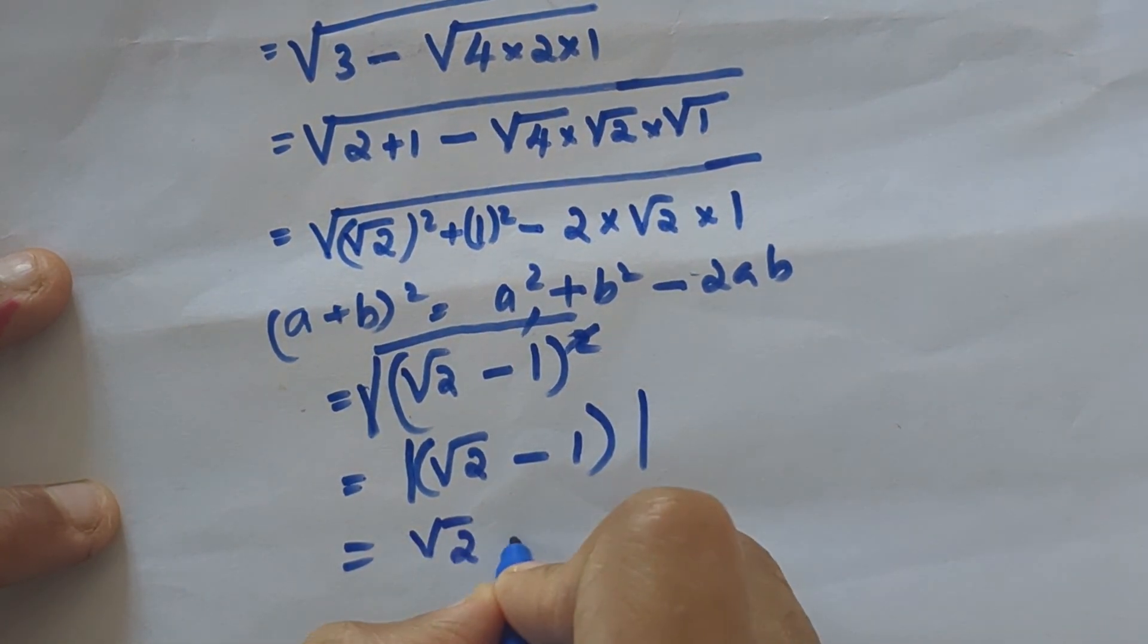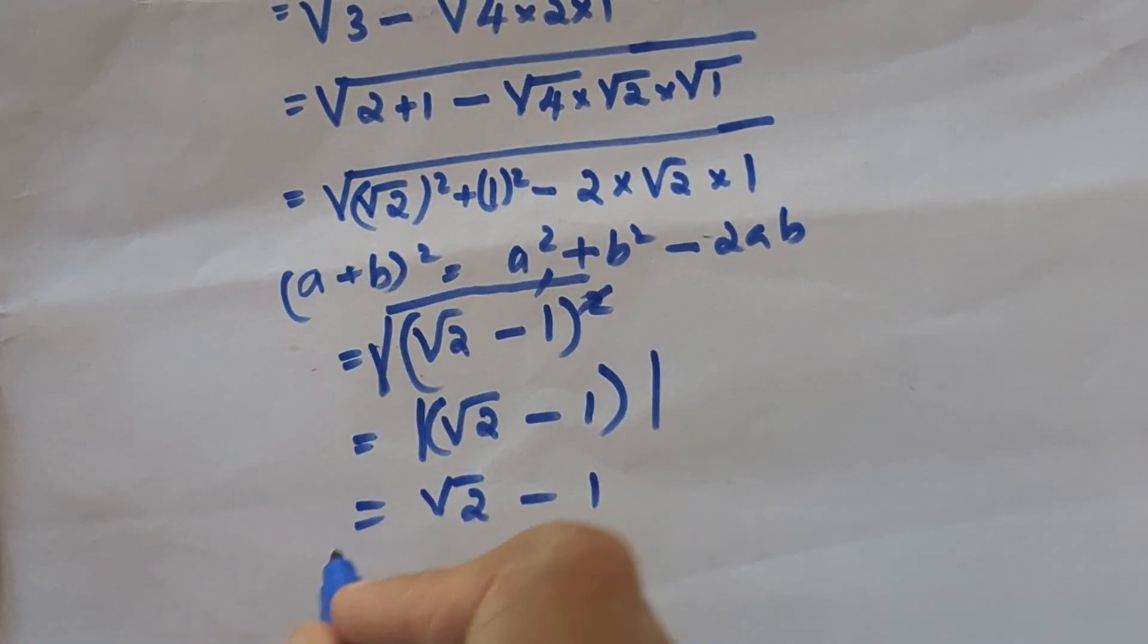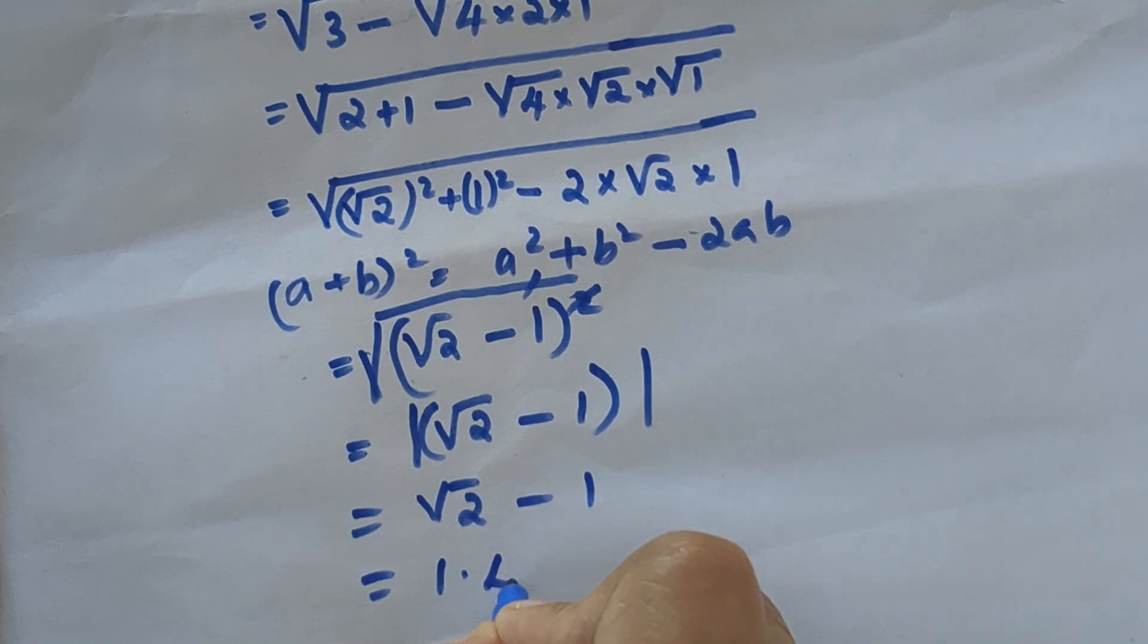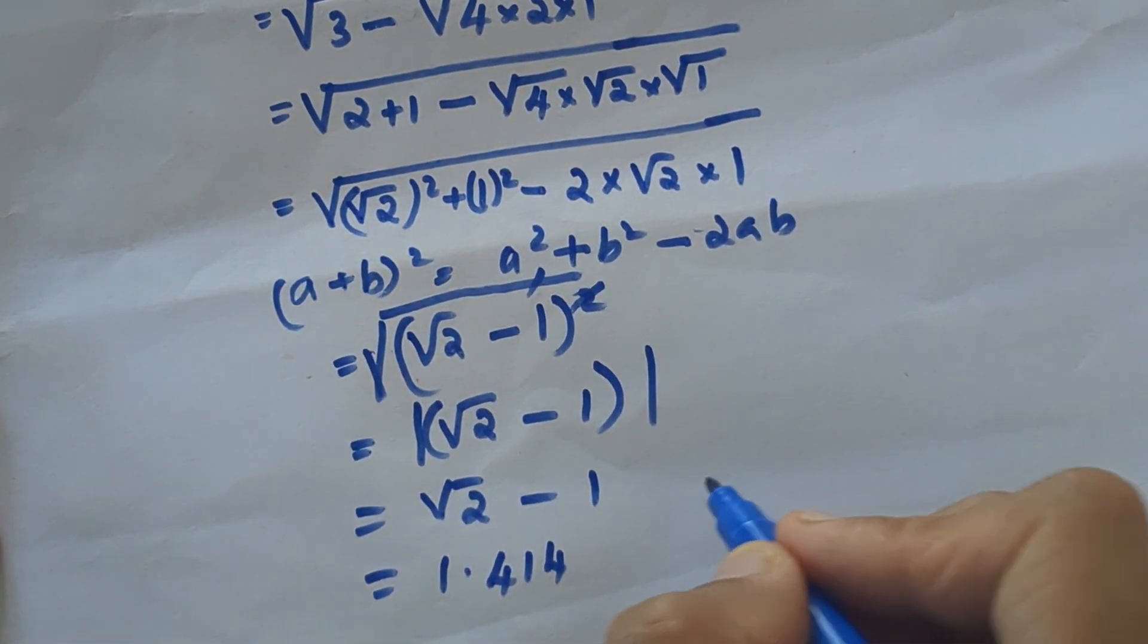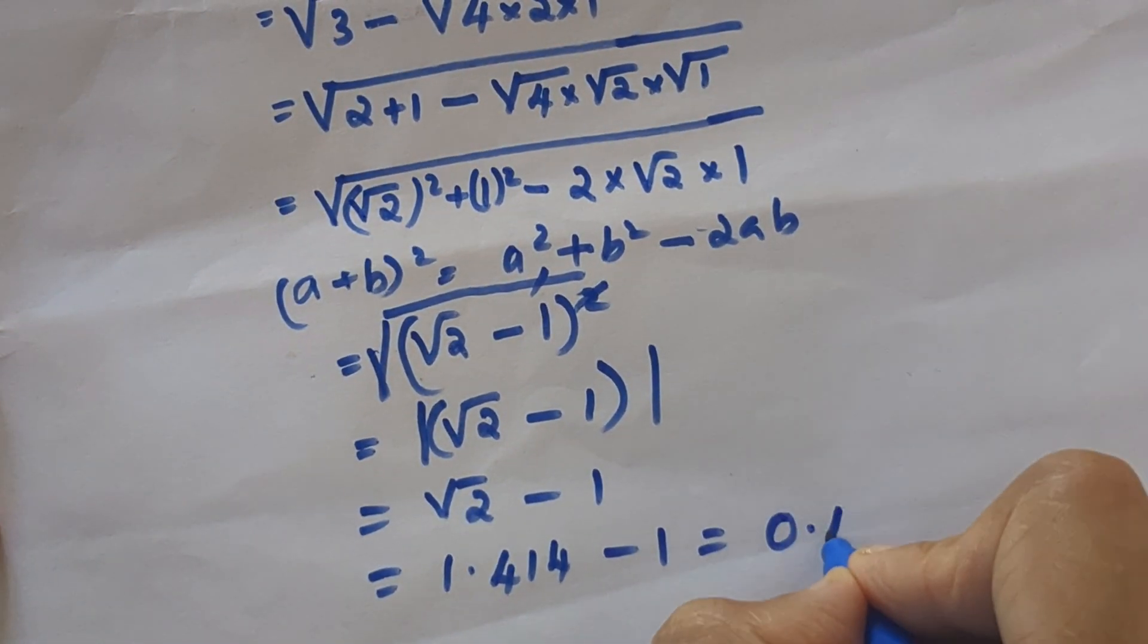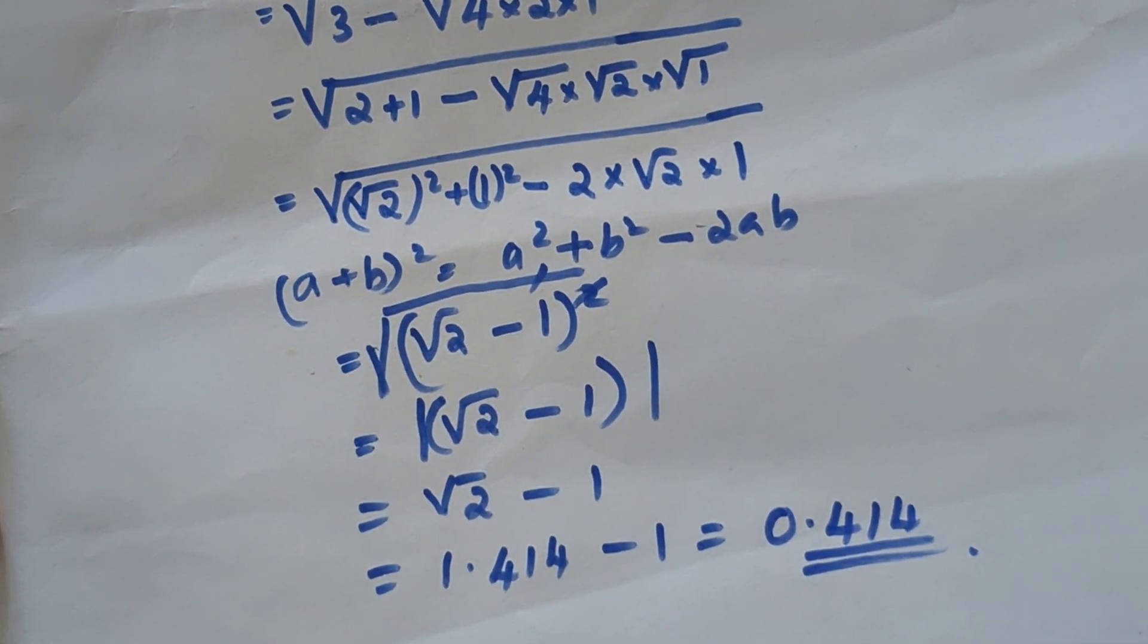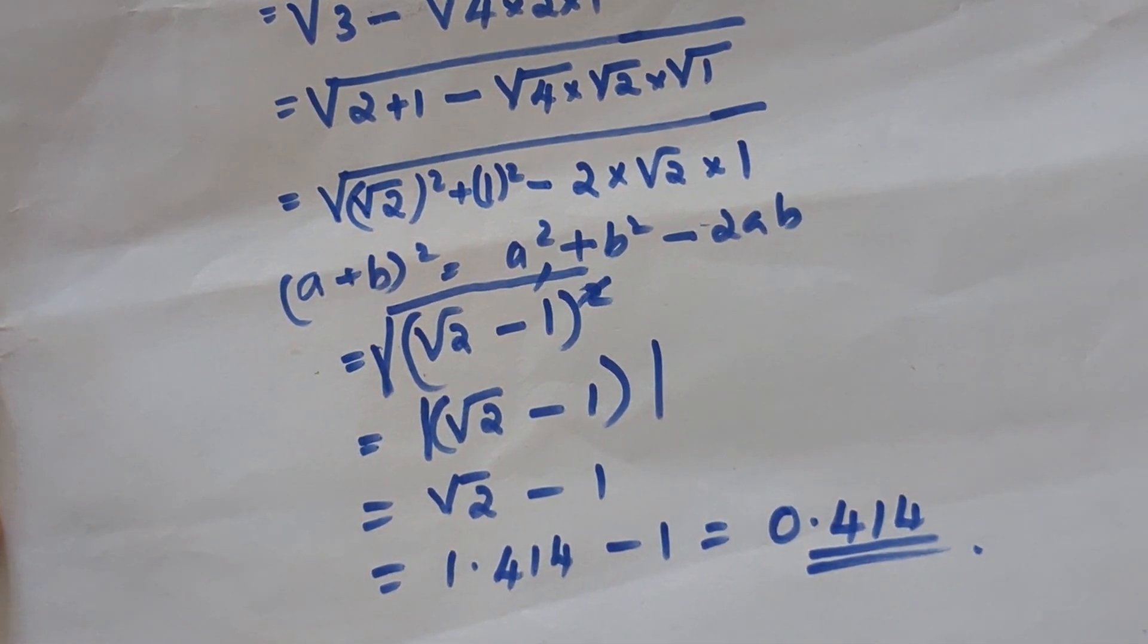What is root 2? Root 2 is 1.414, we use it in most math problems, so you may be familiar. Minus 1, which equals 0.414. That's how we solve without a calculator. Don't forget to subscribe.